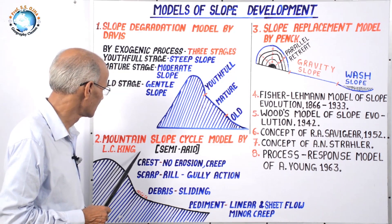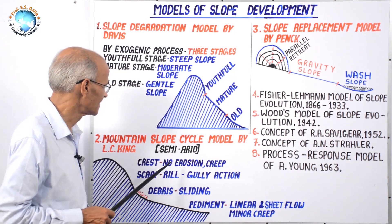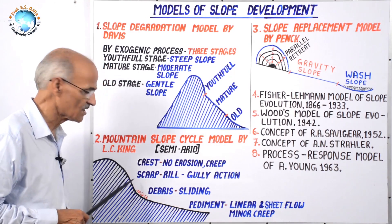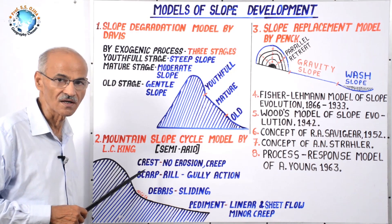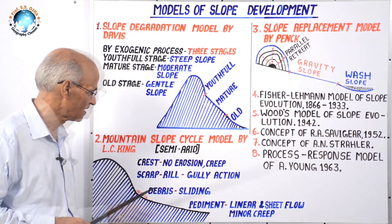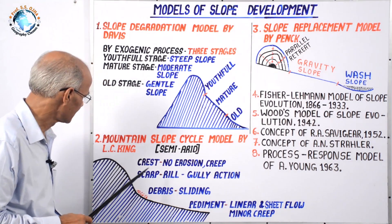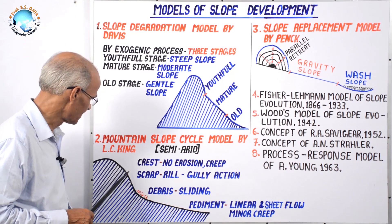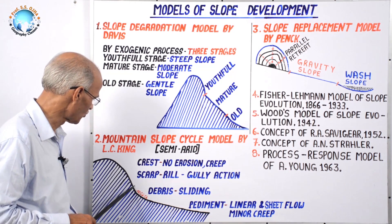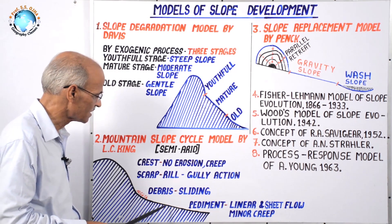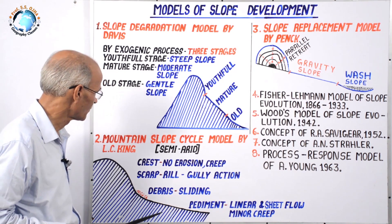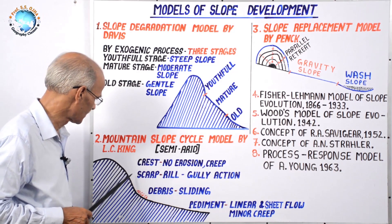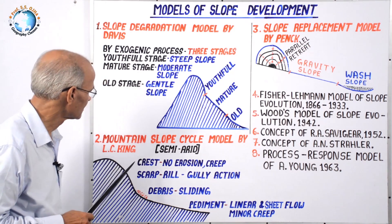L.C. King was a geomorphologist working in the field of semi-arid regions. In semi-arid regions, landforms like pediment, bajada, and playa are found. A hill or mountain in this setting has a steep scarp slope, along with rectilinear and concave slopes — similar to what is studied in the Davisian cycle of erosion.